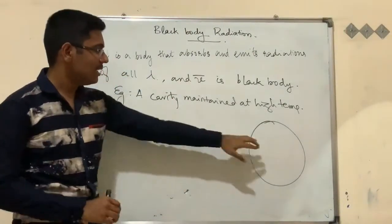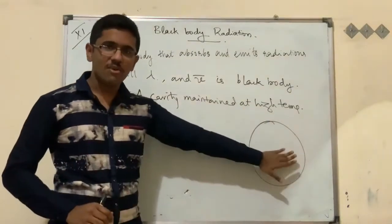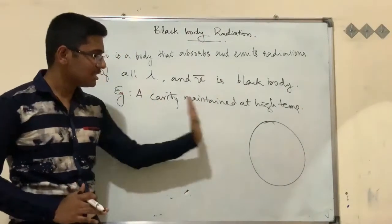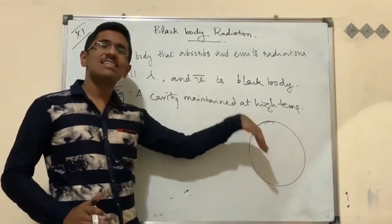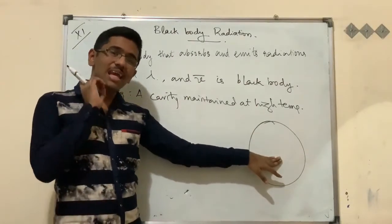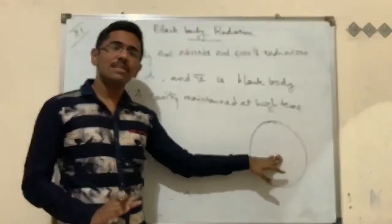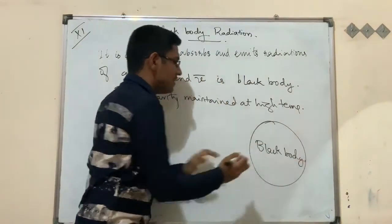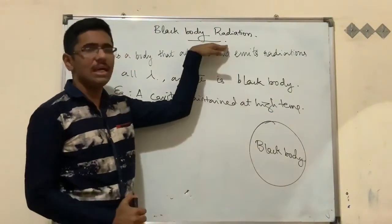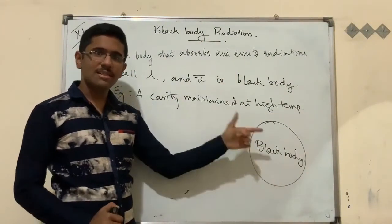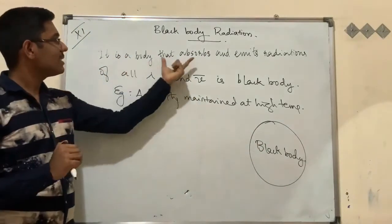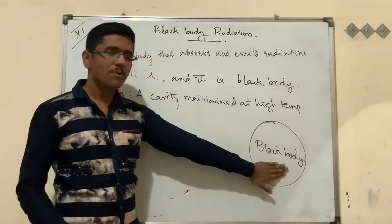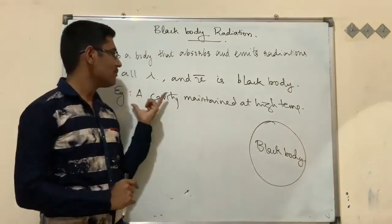Consider a cavity maintained at very high temperature as an example of a black body. Any wavelength projected onto this black body is absorbed as well as emitted. If it can absorb and emit any wavelength, it is termed a black body. So a black body is a physical substance that can absorb and emit all radiations of any wavelength or frequency.